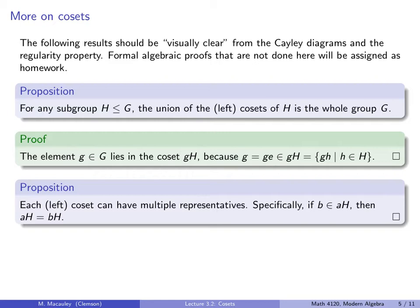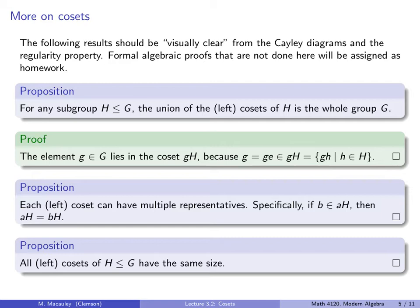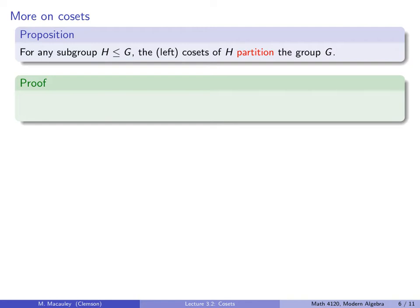Next result: each left coset can have multiple representatives. We saw this on the previous slide, but more is true — if we take any element B in the left coset AH, then AH and BH are actually the same coset. The last proposition here is that all left cosets of the same fixed subgroup have the same size, which should be visually clear from the Cayley diagrams.